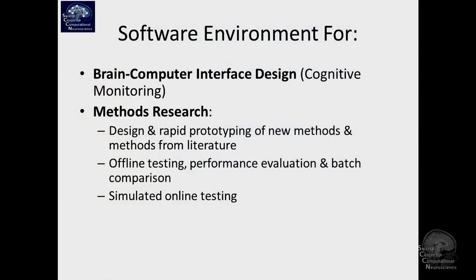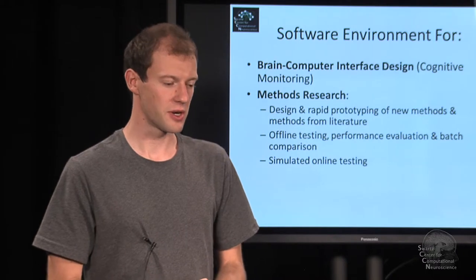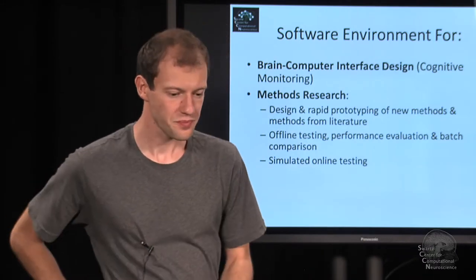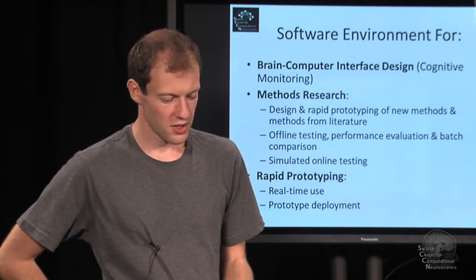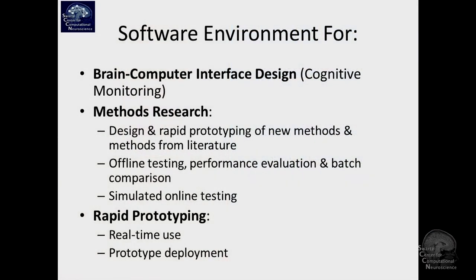To this end, the toolbox is built to allow us to design and rapidly prototype new methods, re-implement things from the literature, and test them offline — evaluating how well they work, doing large-scale comparisons between lots of methods on large datasets, and testing things pseudo-online. The third area is rapid prototyping of things that can actually be deployed in real time, such as putting them into prototype systems like a laptop in a car, to move to actual production work very quickly.